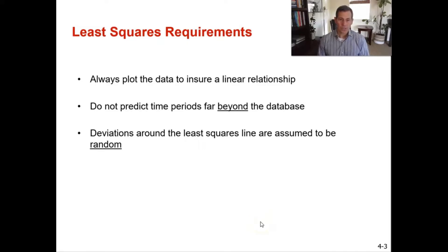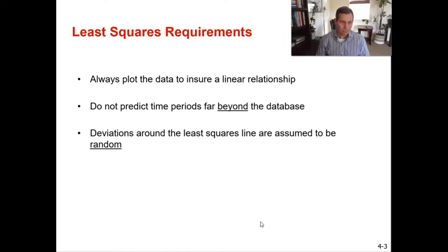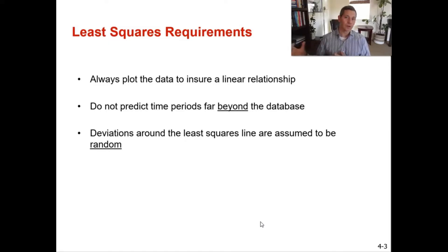For the least squares requirements, you will always want to plot the data to ensure there is a linear relationship — either going up or going down, but some kind of trend. We do not want to try to predict time periods too far outside of the database. In the example coming up, we have seven years of data and we'll predict year eight — you could also look at year nine or ten. But you don't want to predict year 25 or 30; that's too far away. This works for future time periods within reason.